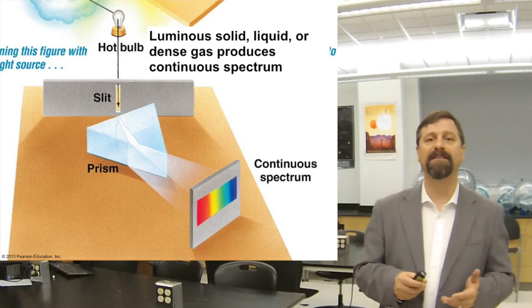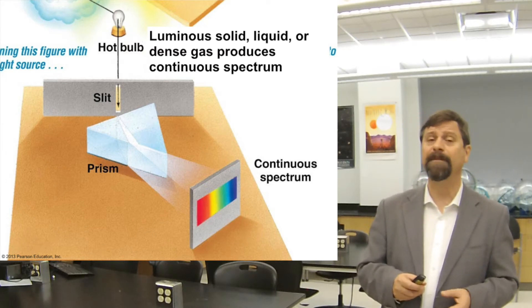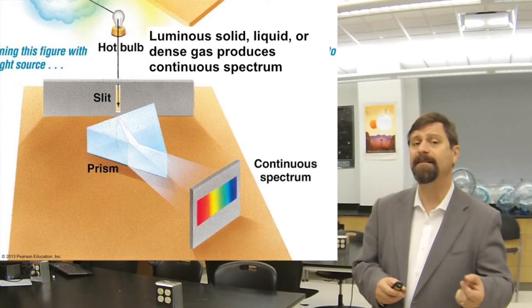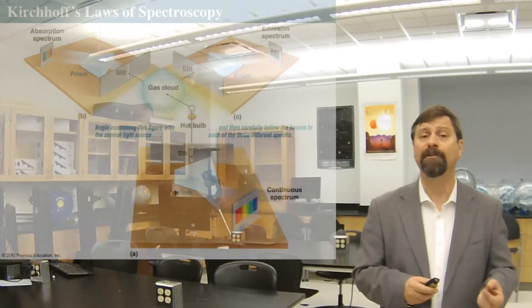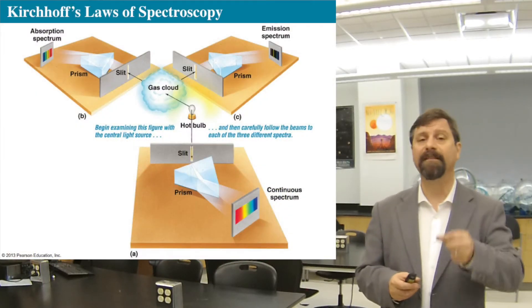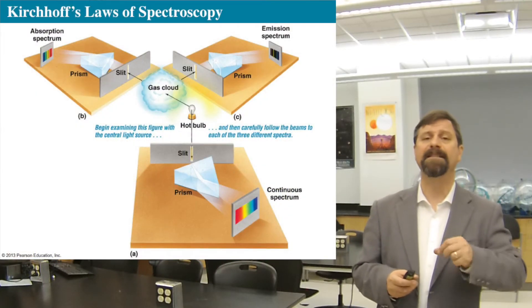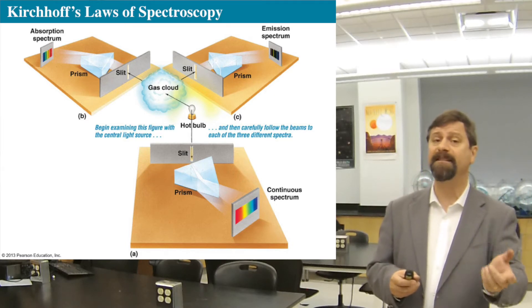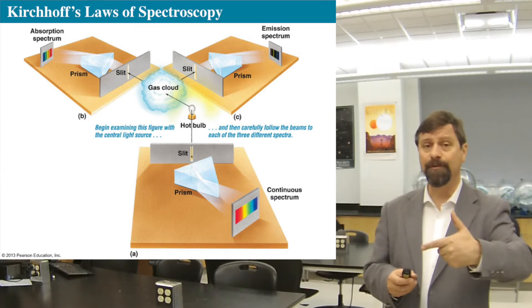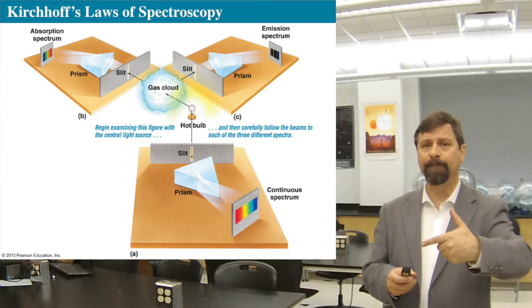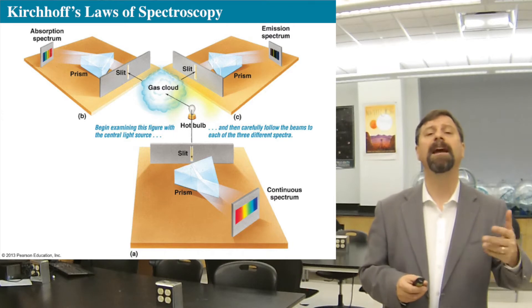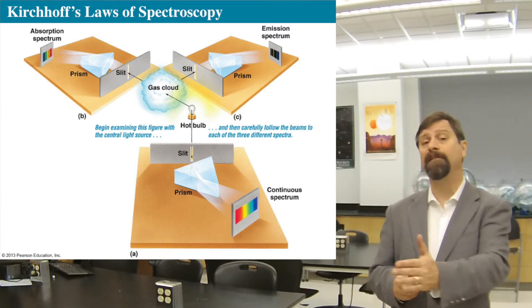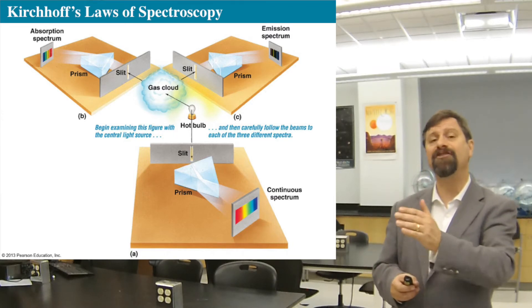If something hot and opaque is behind a cloud of cooler gas, and we look through the cooler gas to the hot source, we will see an absorption spectrum.